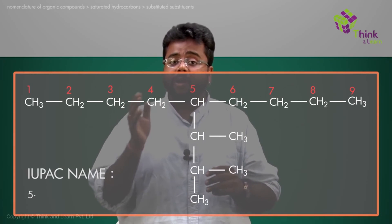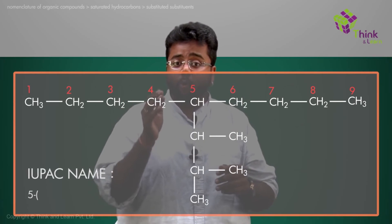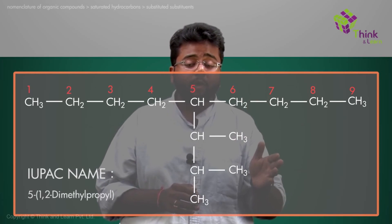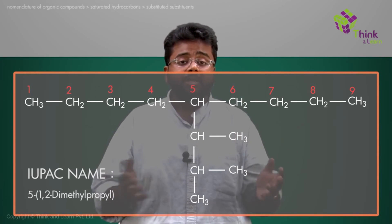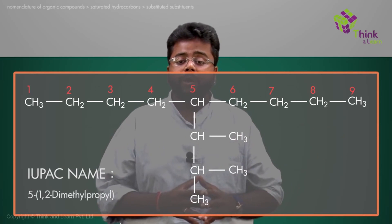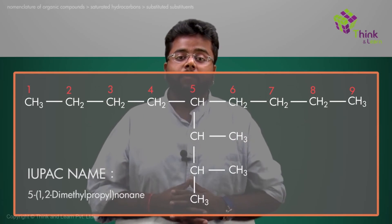So this would become 5-(1,2-dimethylpropyl), bracket close, and 9-carbon with single bonds each would become nonane. So this would be the name of the compound.